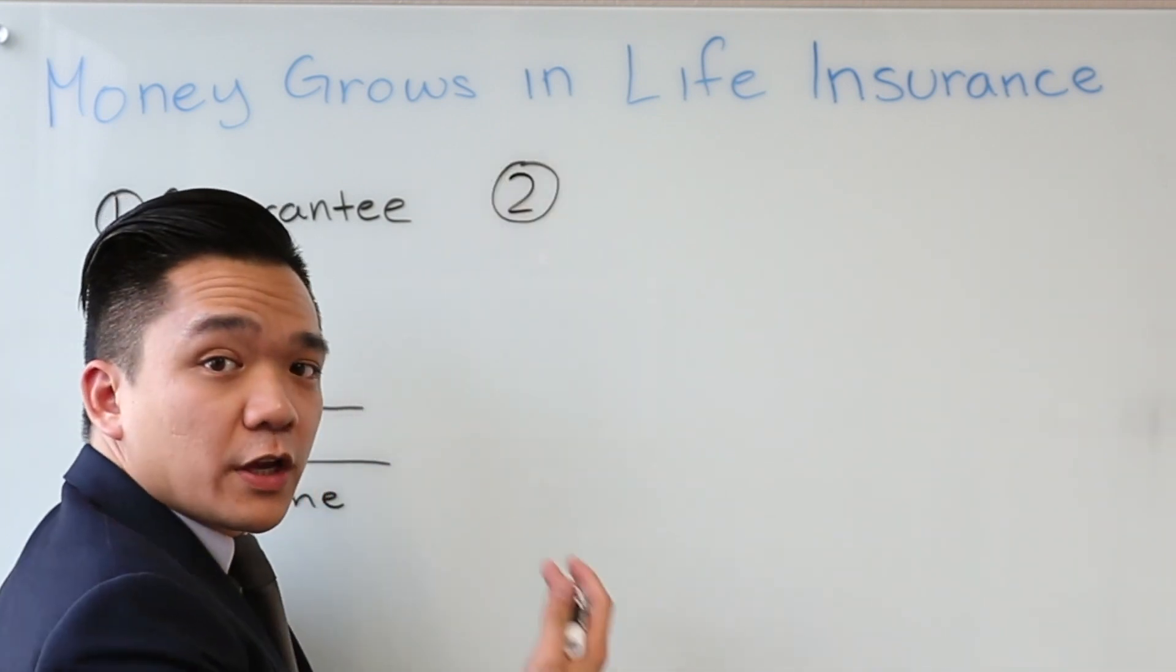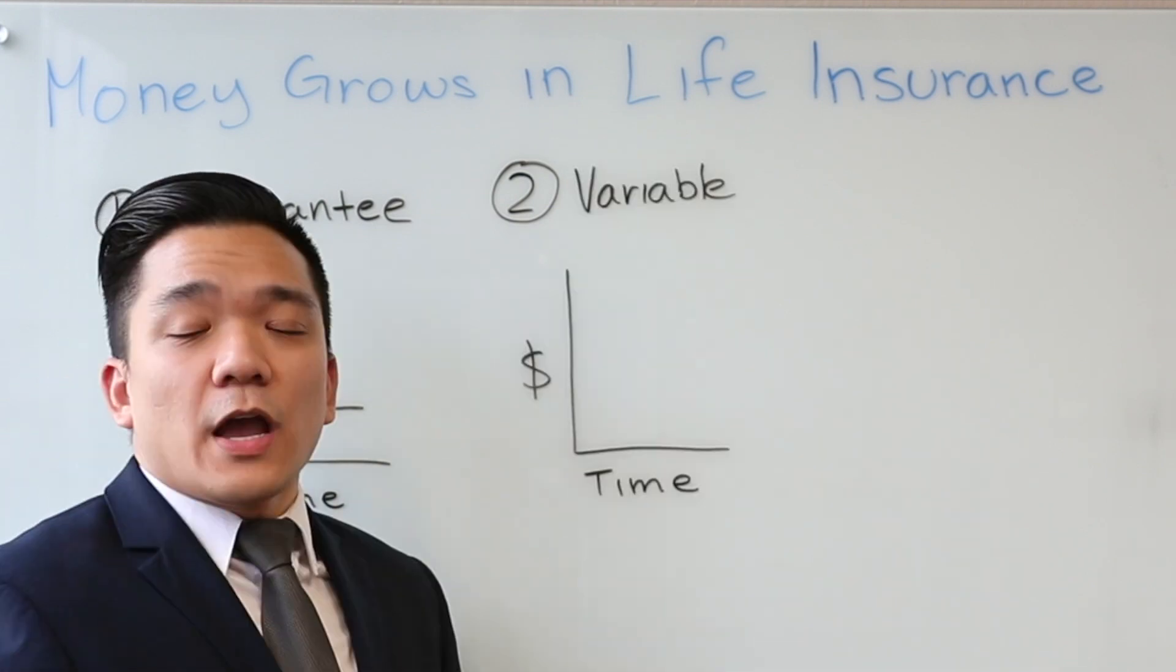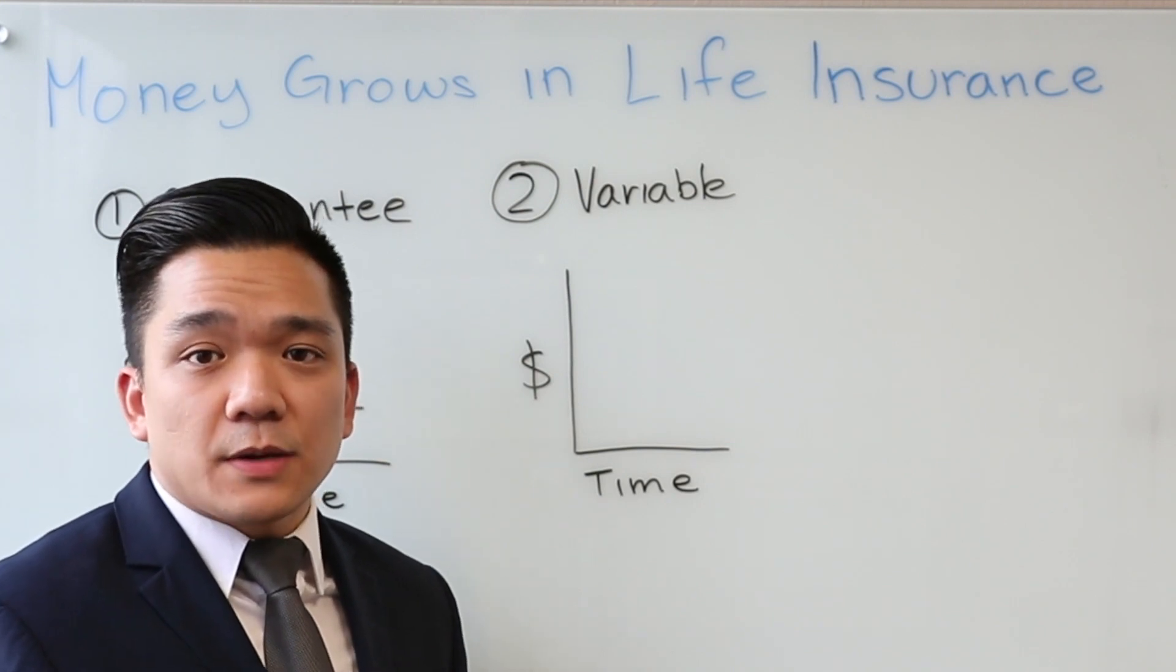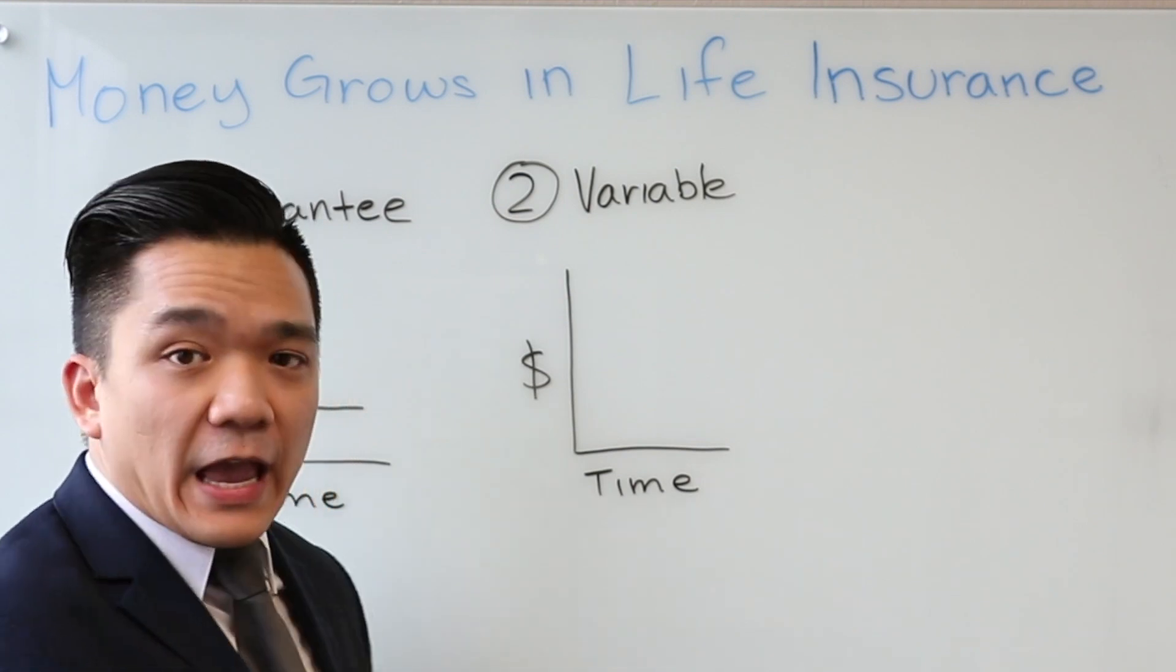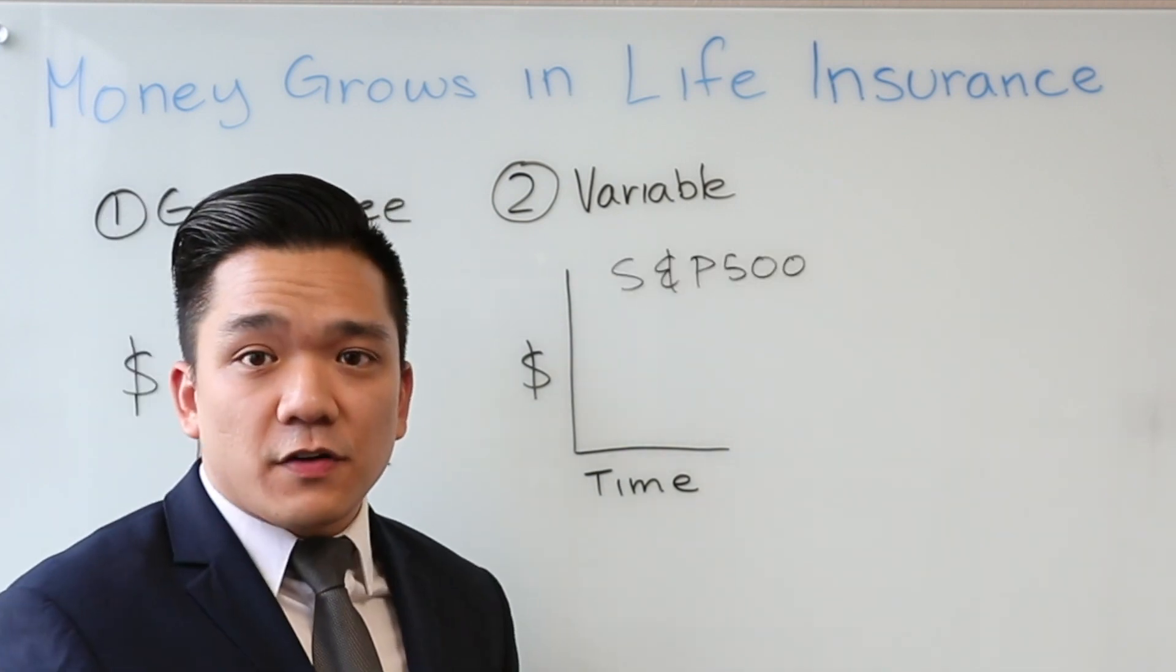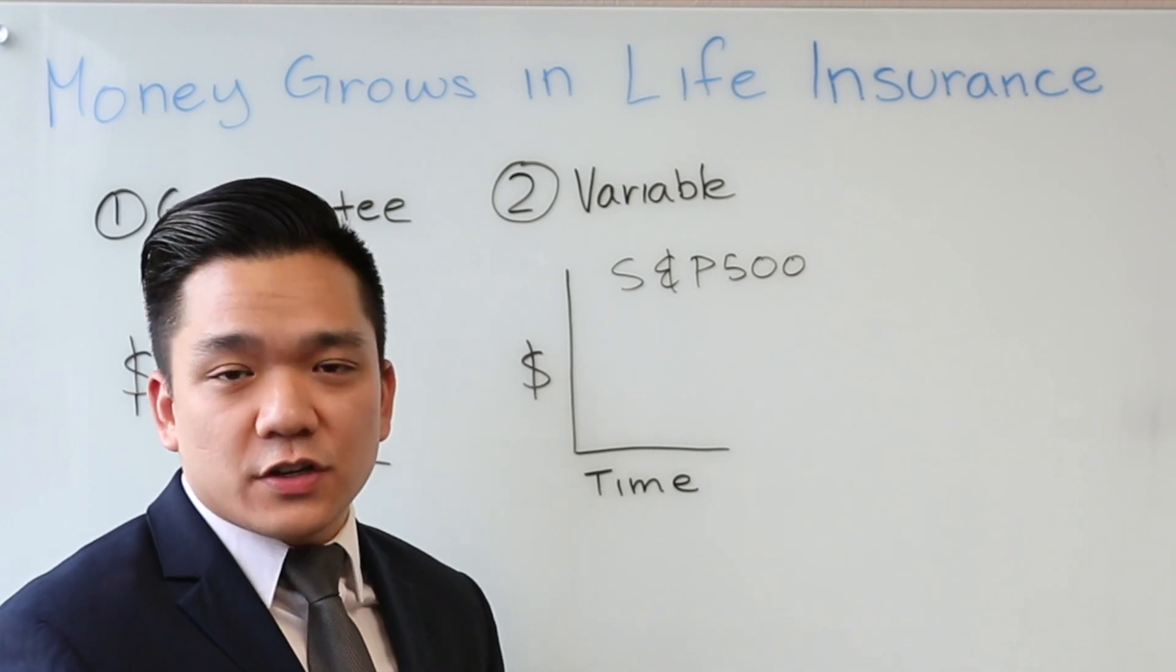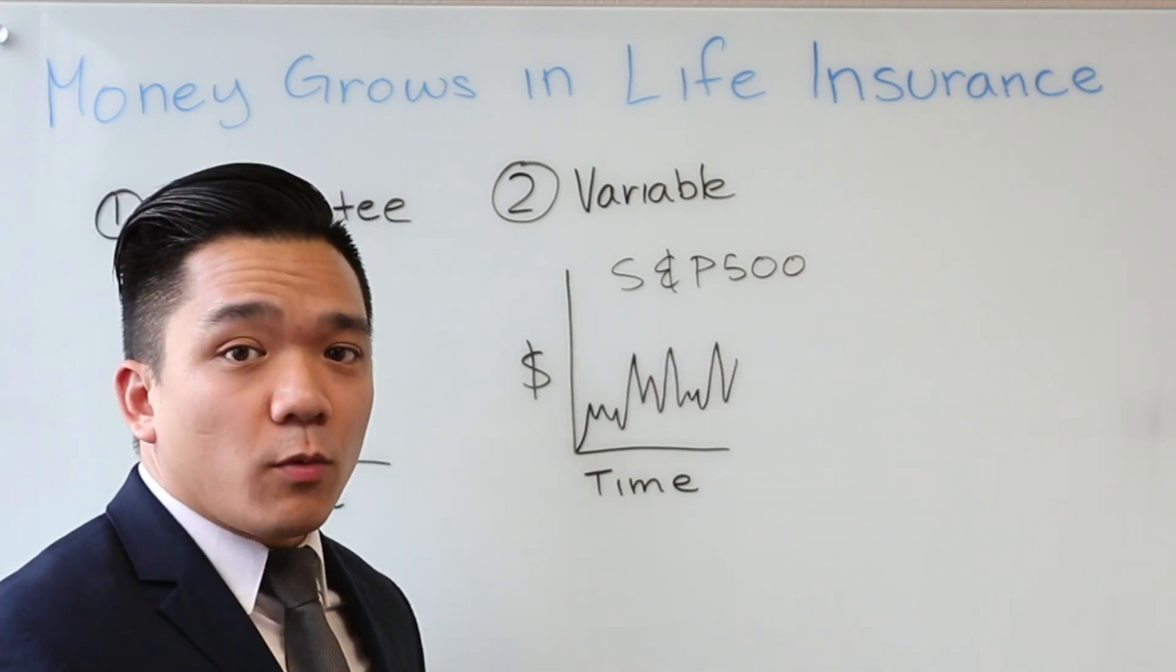Number two, looking at the same variables, we're actually going to look at something called variable life insurance. And with variable life insurance, you're actually reflecting the same type of growth that you see in the market. Now, for example, you can pick any type of funds. Let's just say you want to mimic the S&P 500. If the S&P 500 has any falls, any peaks, that's exactly what's going to happen. It'll look like a traditional stock investment, and you're along for the full ride of that.